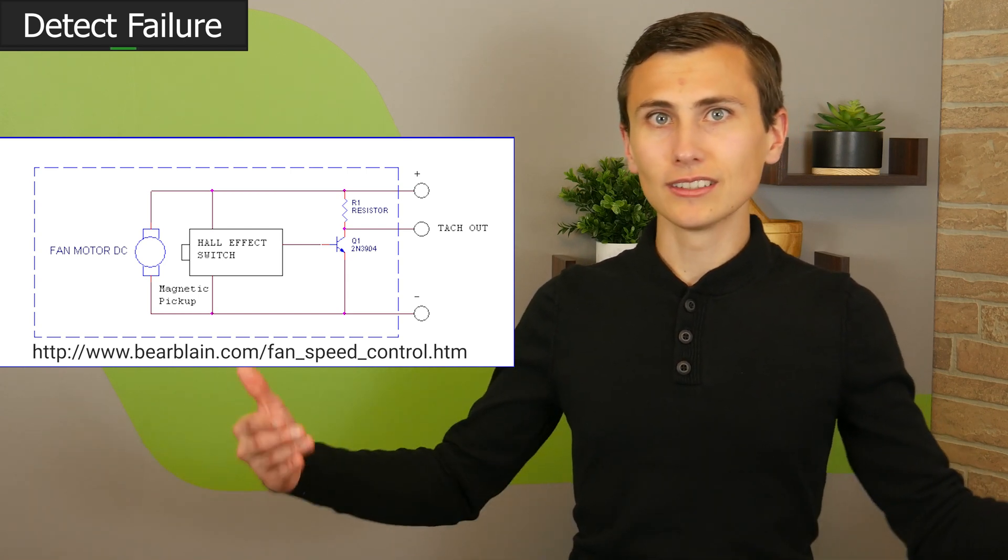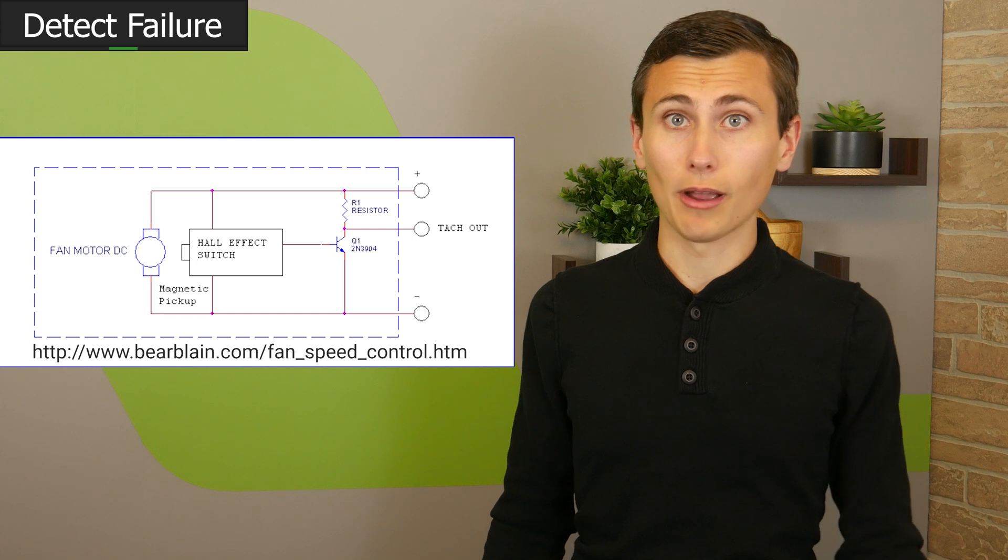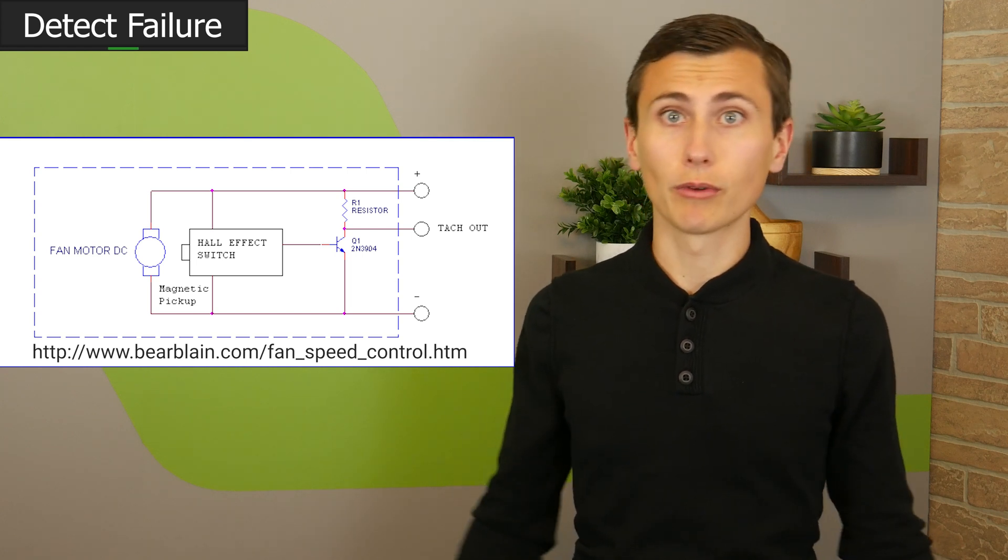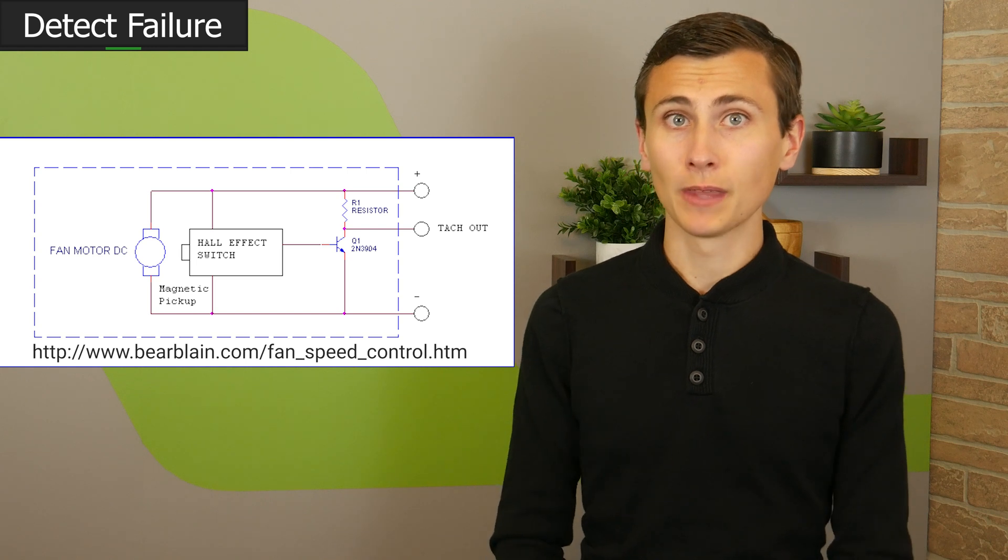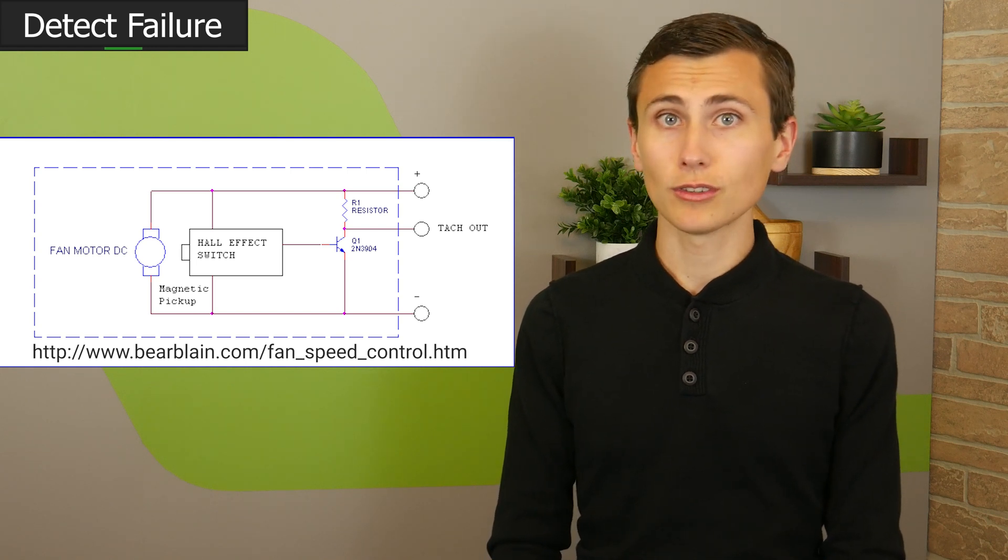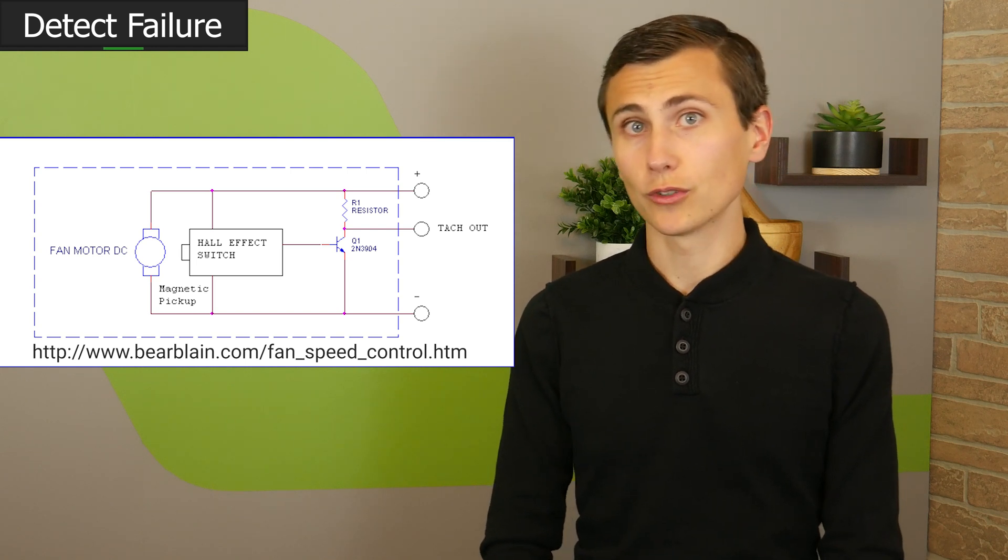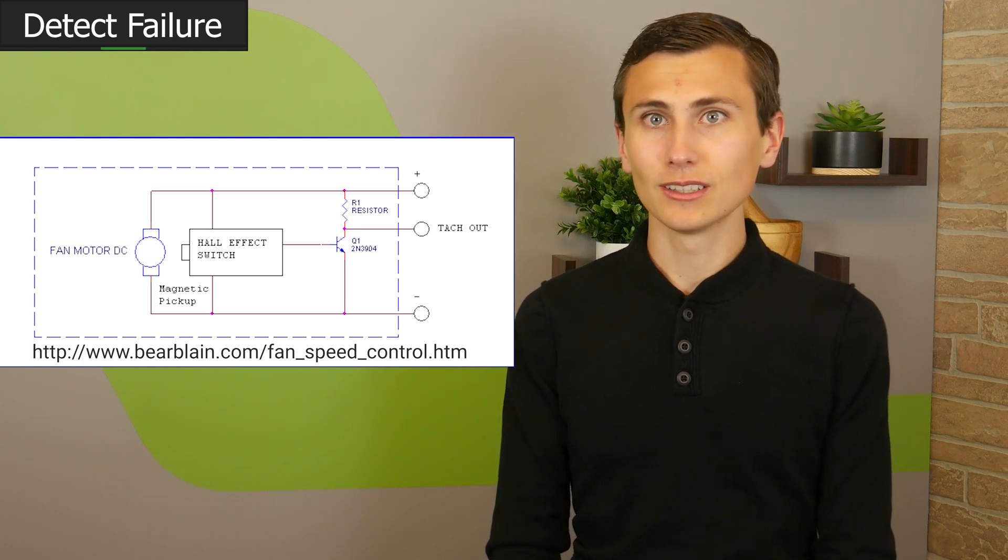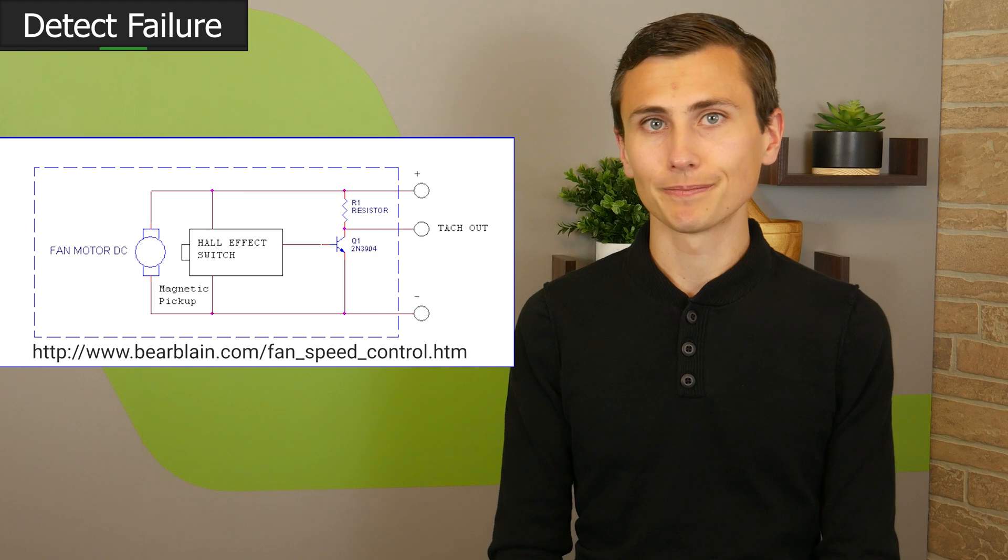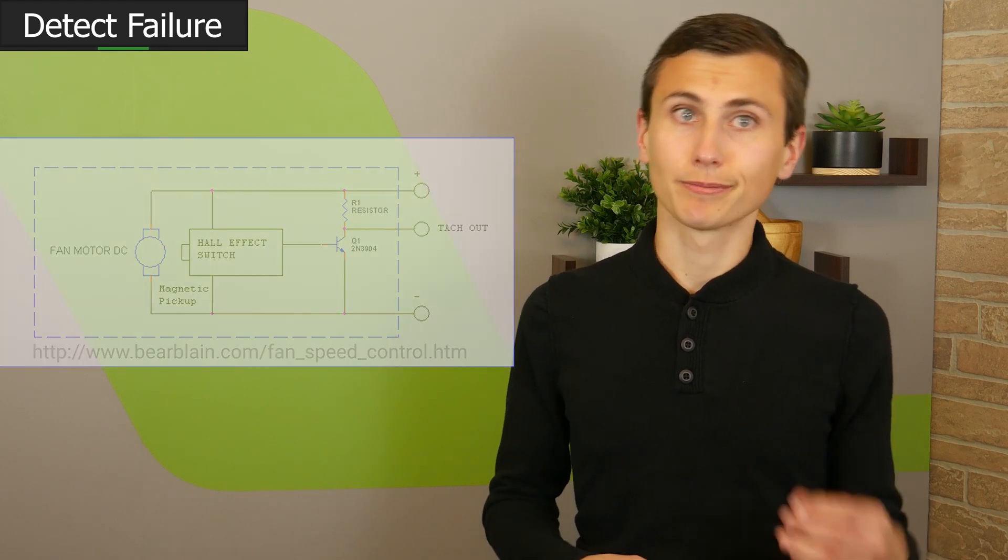The signal is open collector, which means that it's shorted to ground either once or twice a revolution. So all we need to do to interpret this is provide a pull-up resistor. Without an external pull-up resistor, the tachometer output will measure zero volts all the time. That's no good. This open collector signal is what the microcontroller was polling. Turns out that wastes a lot of memory and processor power to poll the fan state about 100 times a second. So there has got to be a better way.